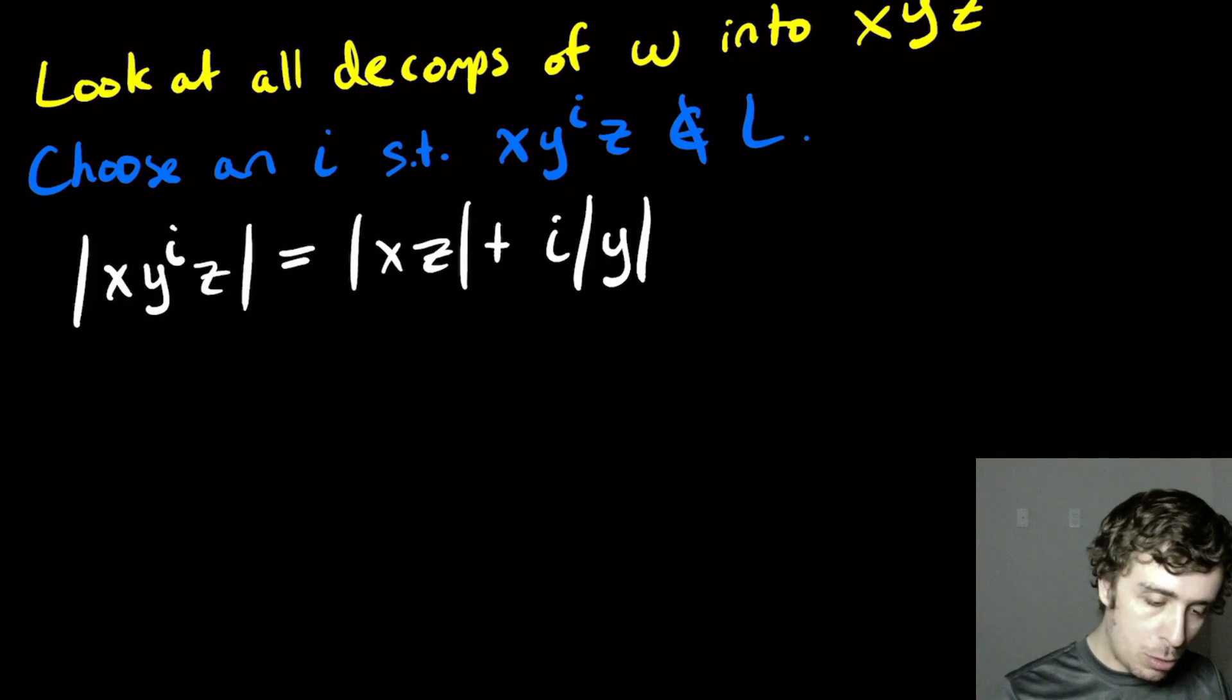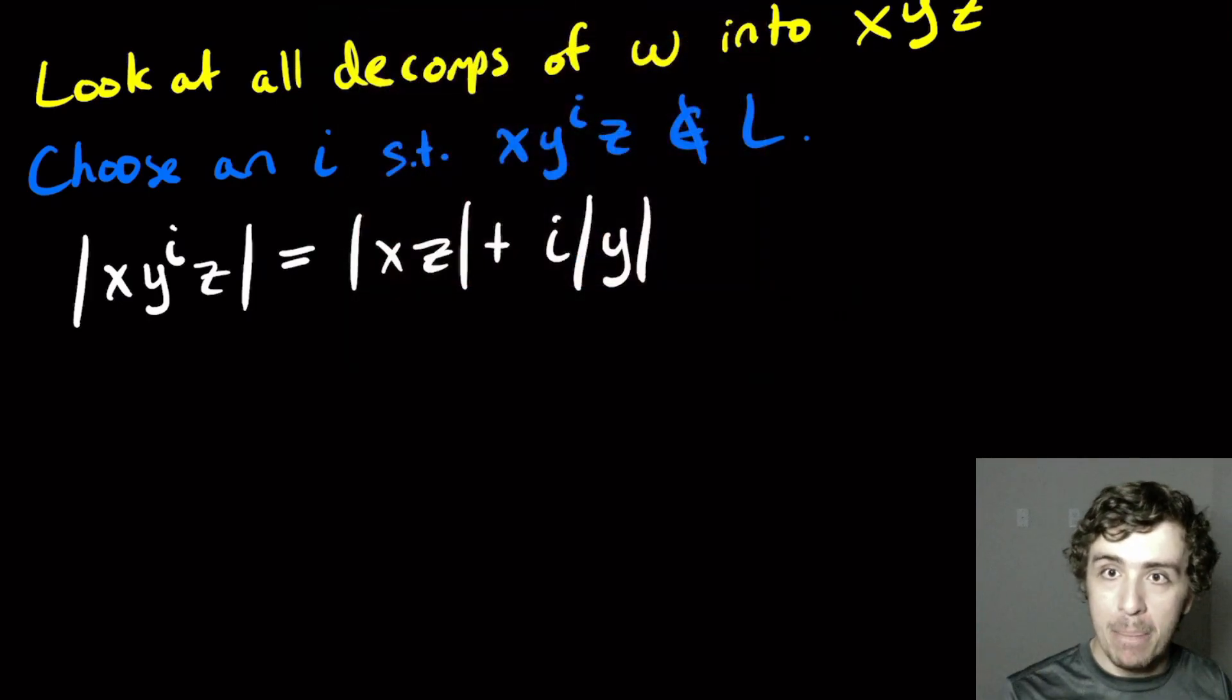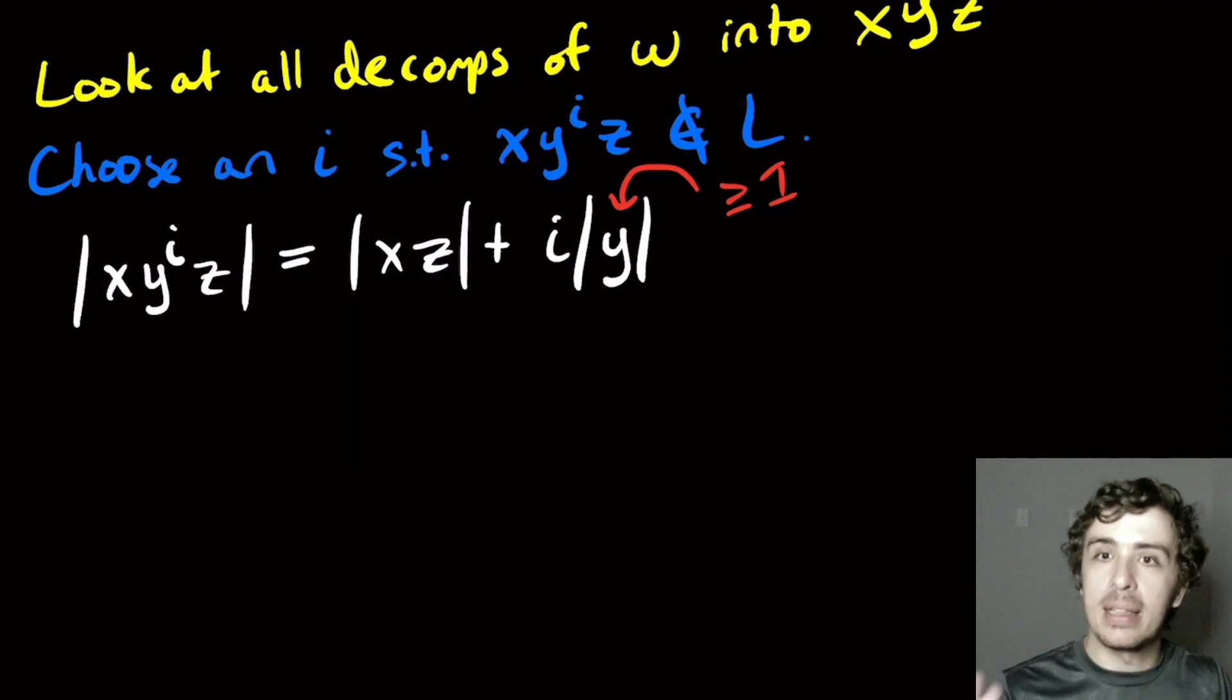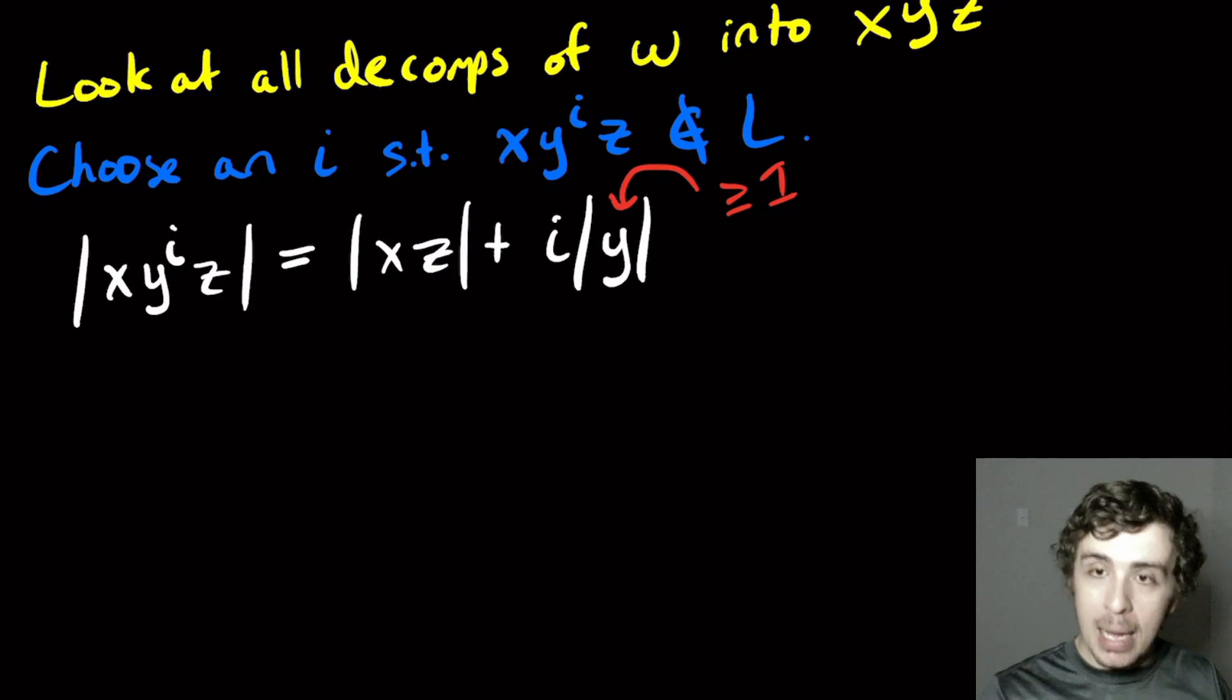So what can we infer from this? We know based on the pumping lemma conditions that the length of y is at least one. How do we get from at least one to at least two? We add one to it.